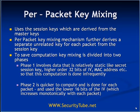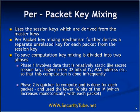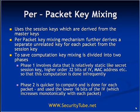In phase 1, it involves data that is relatively static — like the secret session key, higher order 32 bits of the initialization vector, MAC addresses, etc. For a communication session, MAC addresses are not going to change; source and destination MAC addresses remain fixed. The higher order 32-bit IV is also not going to change frequently, and the secret session key is constant for a session. So with these relatively static inputs, the phase 1 computation is done, and one key mixing part of the vector is derived.